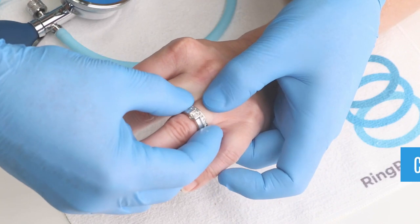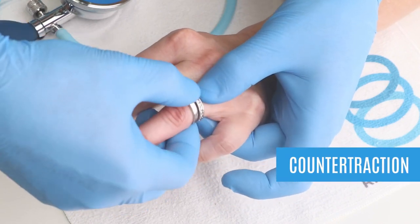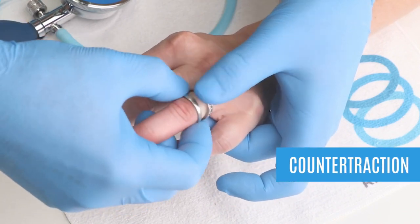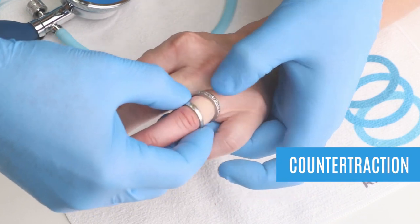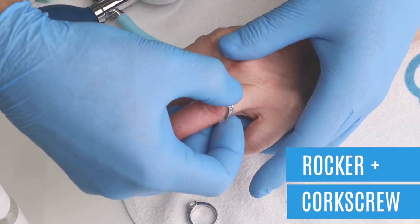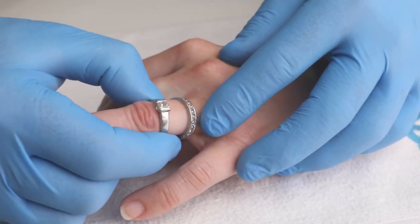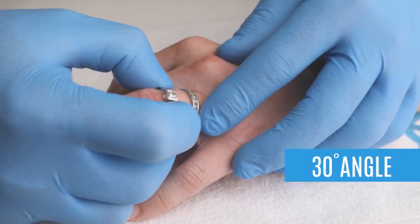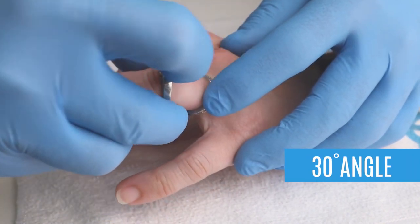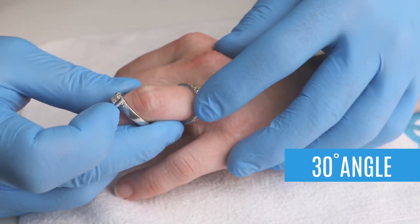If still meeting resistance, use counter traction with your non-dominant hand to pull the skin back towards the base of the finger, while slowly progressing the ring off while using the rocker and corkscrew techniques. If over the knuckle and you're still just hung up on that last bit of skin, have the person bend at the knuckle to a 30 degree angle. It changes the angle and stretches the skin to help you get the ring off.